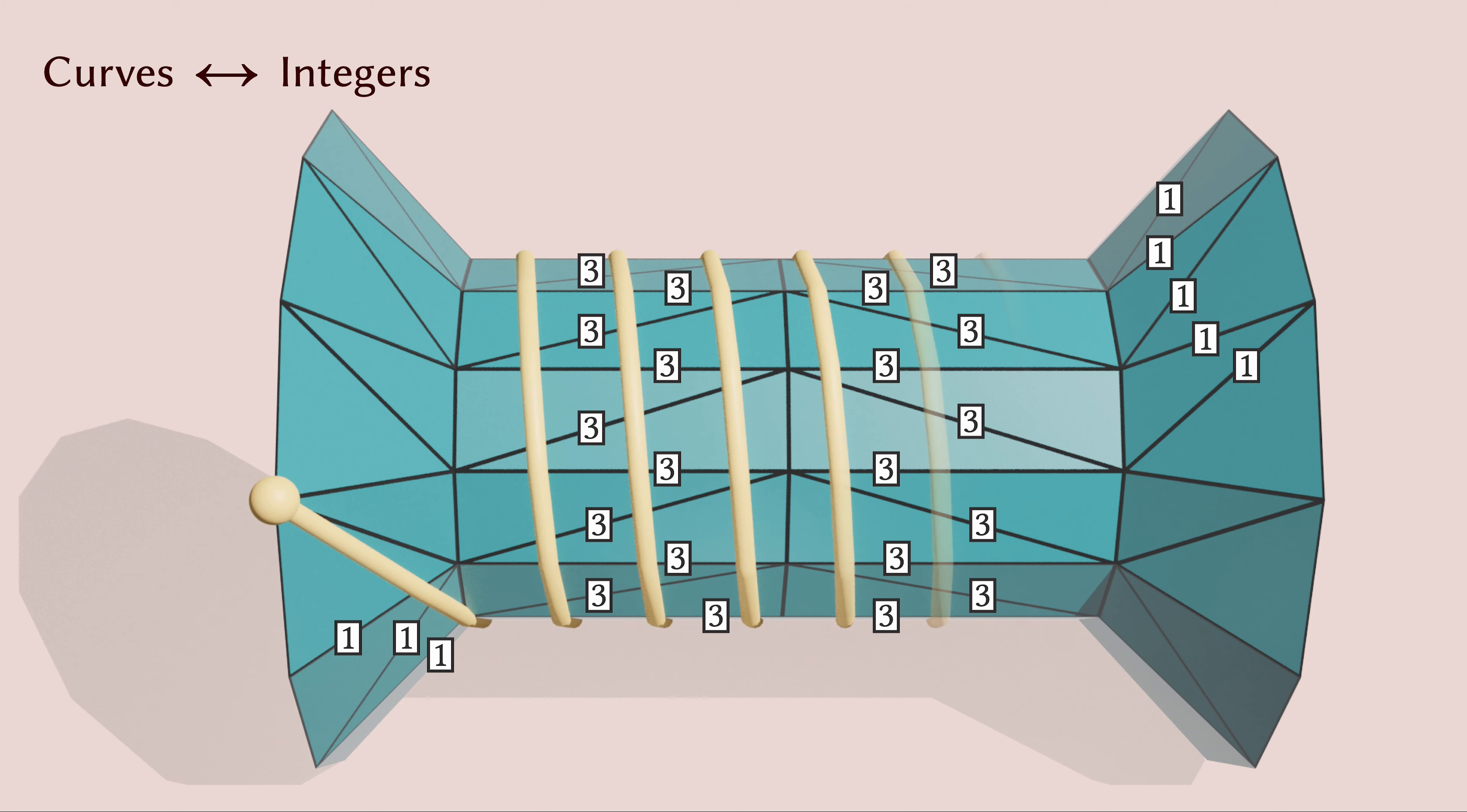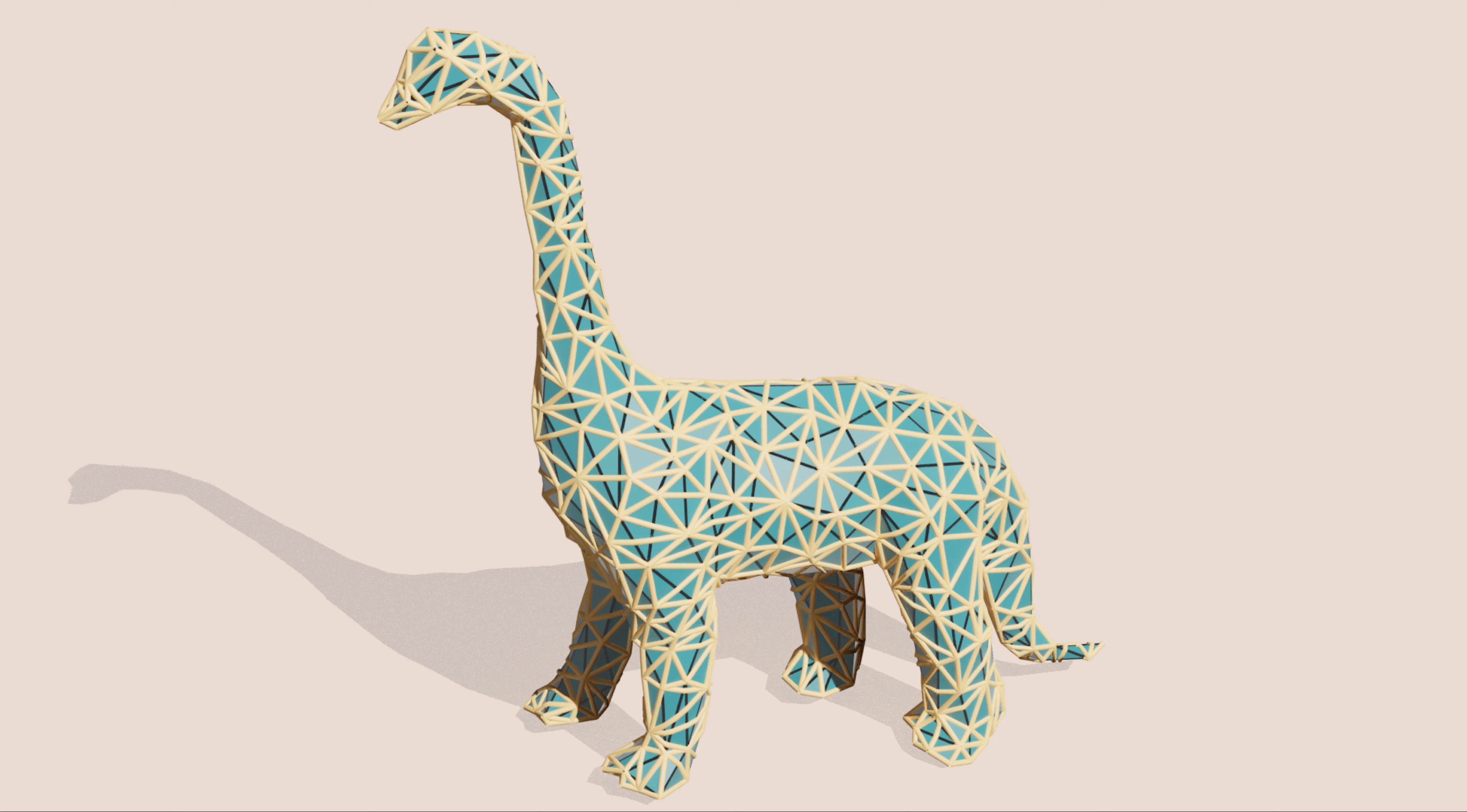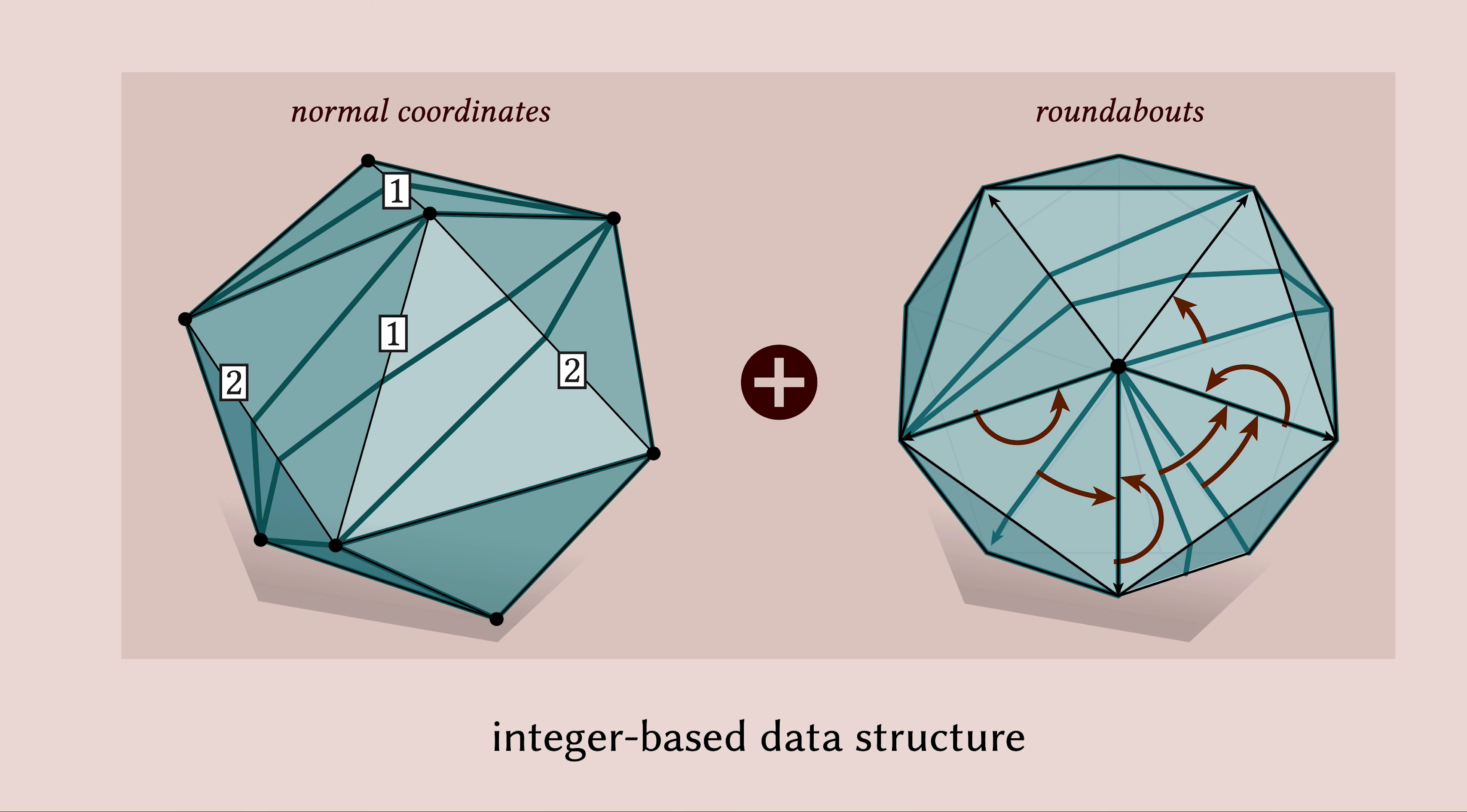This strategy works even on very complicated curves. Moreover, we can represent a whole new triangulation sitting along the mesh in the same way. We use this simple idea to build a robust data structure for intrinsic mesh processing.